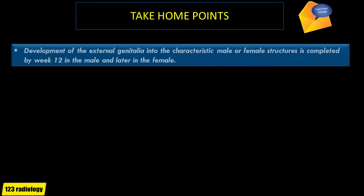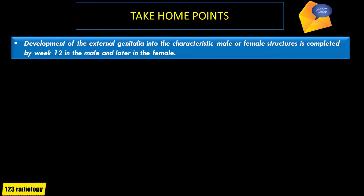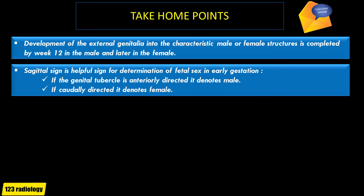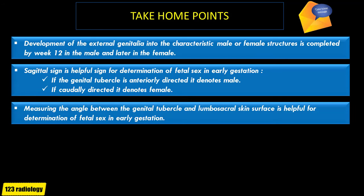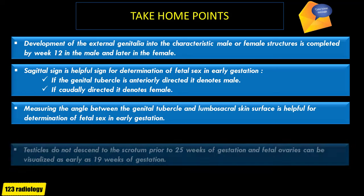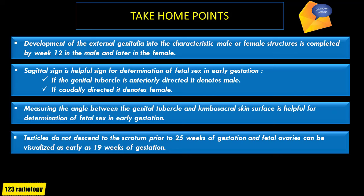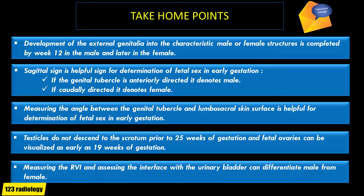Take-home points: Development of the external genitalia into characteristic male or female structures is completed by week 12 in the male and later in the female. The sagittal sign is a helpful sign for determination of fetal sex in early gestation — anteriorly directed genital tubercle denotes male, caudally directed denotes female. Measuring the angle between the genital tubercle and lumbosacral skin surface is also helpful. Testicles do not descend prior to 25 weeks, and fetal ovaries can be visualized as early as 19 weeks. Measuring the recto-vesical interspace and assessing the interface with the urinary bladder can differentiate male from female fetus. Thank you for your attention.